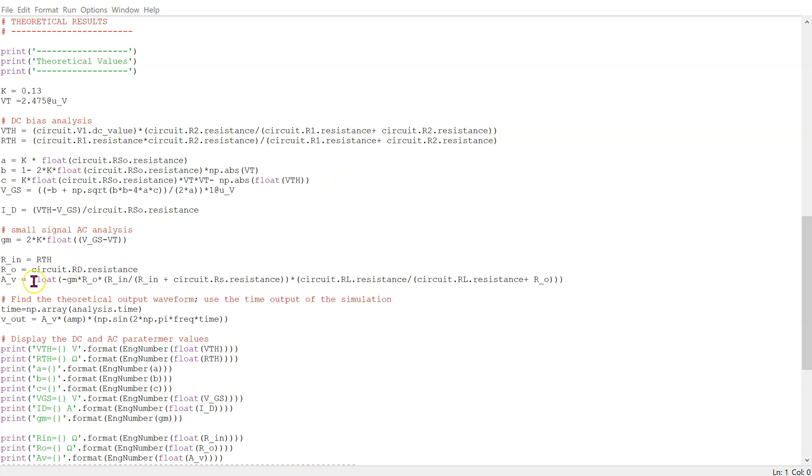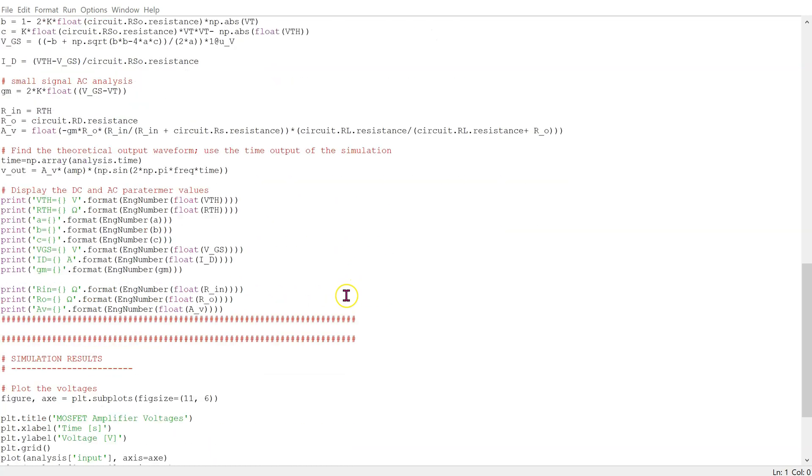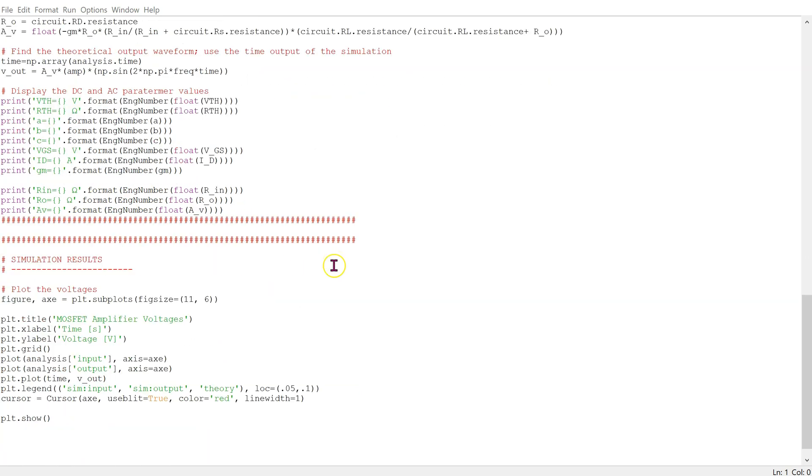In the AC analysis, we calculate the small signal model transconductance, gm, using the device parameters and the DC bias values. Finally, we can display the DC and AC parameter values as well as the plots. The complete code is provided in the video comments section below.